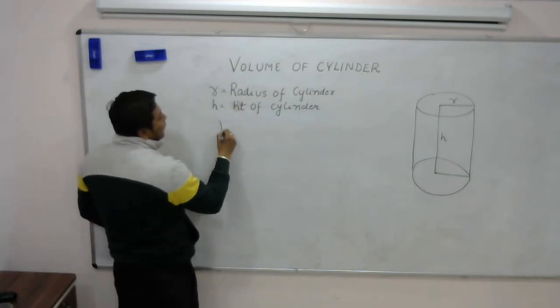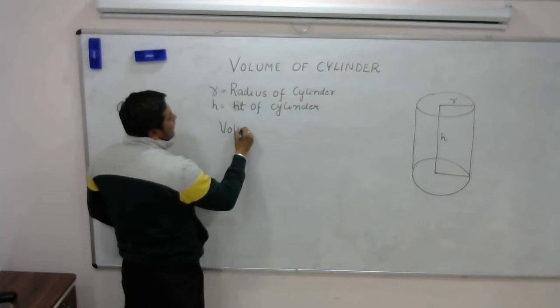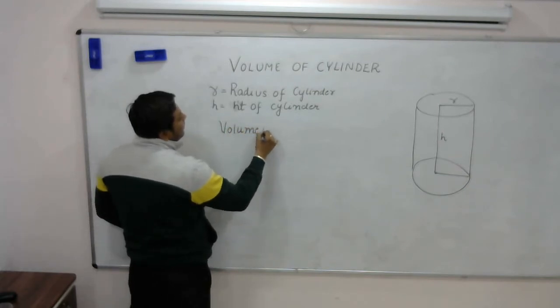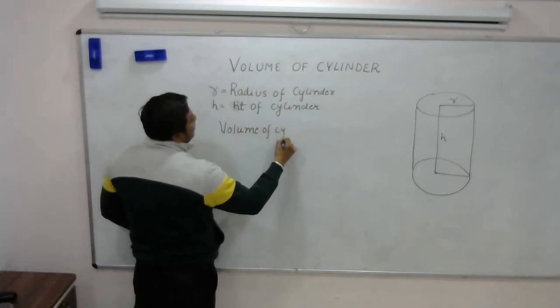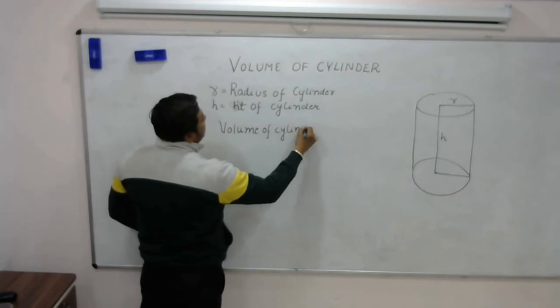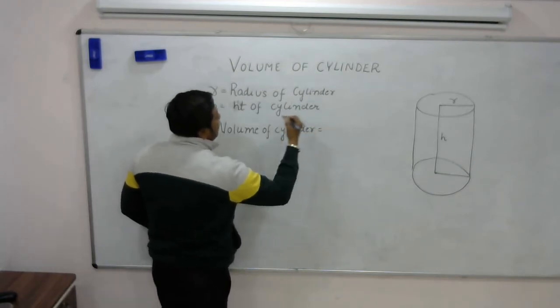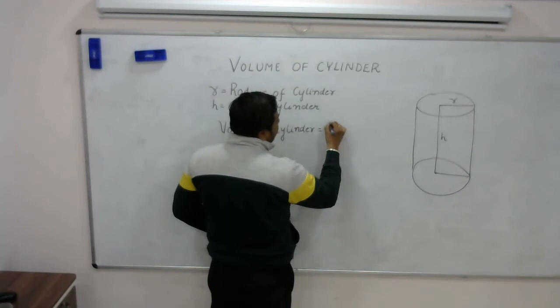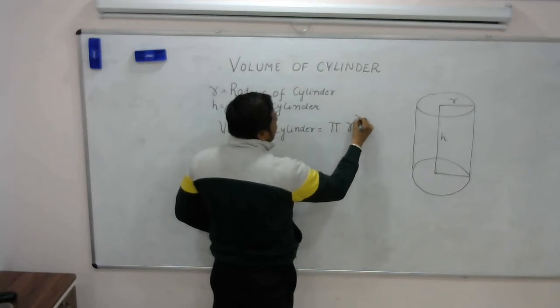Then volume of cylinder is pi R squared into H.